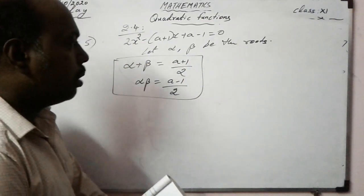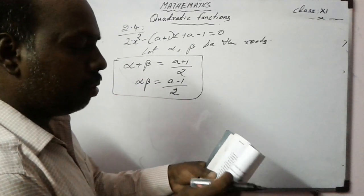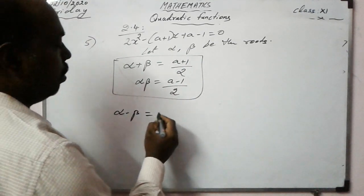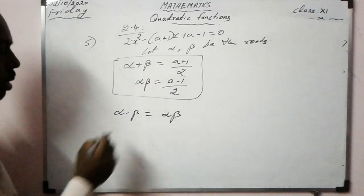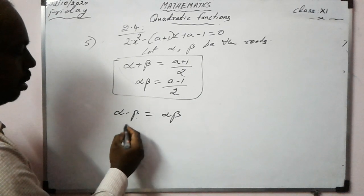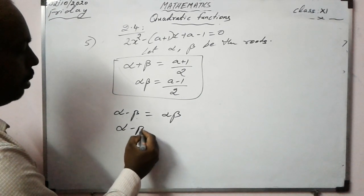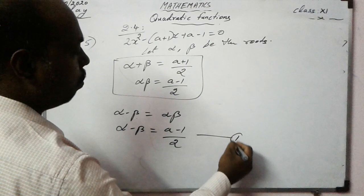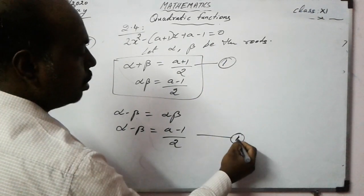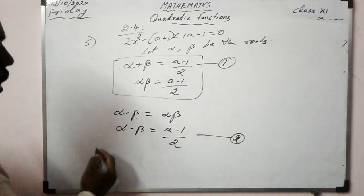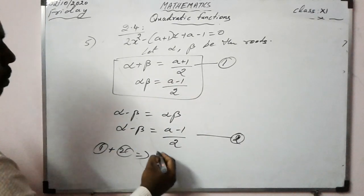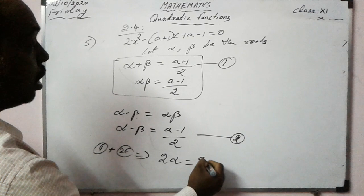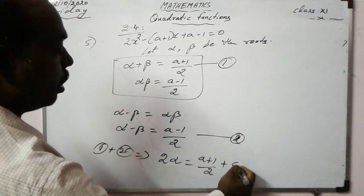Given: difference of roots equals product, so alpha - beta = alpha·beta = a-1. This is equation 1. Adding equations 1 and 2 (sum and difference): 2·alpha = (a+1) + (a-1) = 2a, so alpha = a/2. This is equation 3.